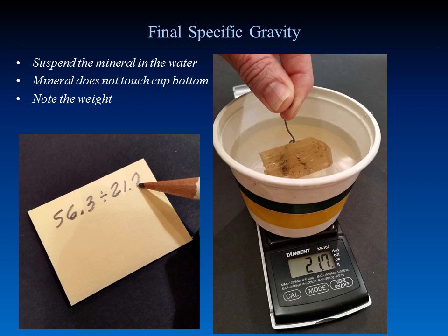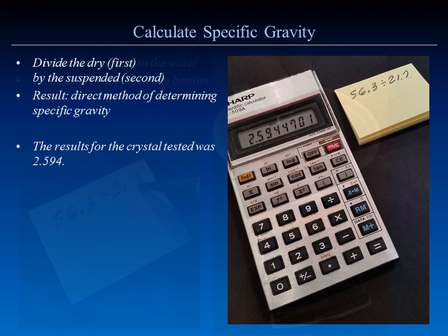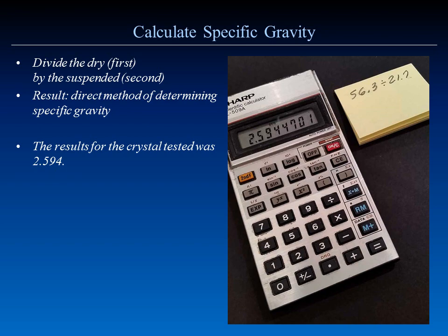We've written our number down and now we have two numbers on our post-it. Divide the first number by the second number and we get a value of 2.594. Those are our results. That's it — we're done.